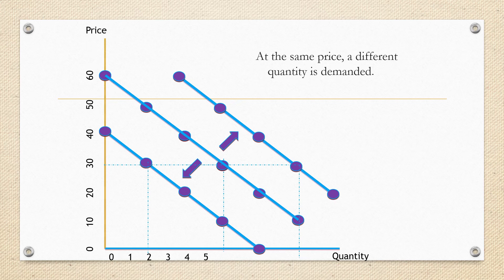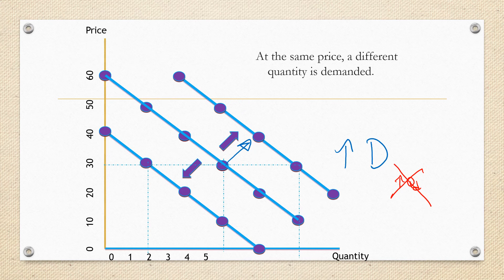If the demand curve is shifting to the right, we call that an increase in demand — and I am not saying 'increase in quantity demanded'; that would be wrong. You must say it is an increase in demand because you have a new demand curve — more than one curve. Whereas if the demand curve shifted to the left, I would call that a decrease in demand.